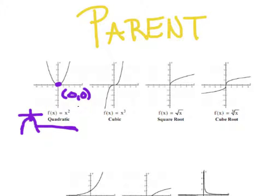The next one is a cubic — y equals x cubed. Its main point that we're going to focus on is zero, zero. You'll notice that it is concave down on the left, concave up on the right. It's important we draw it that way every time.